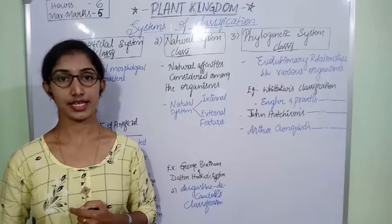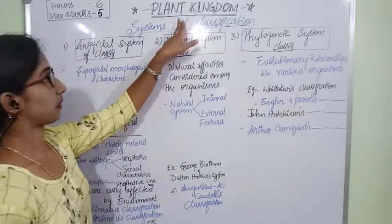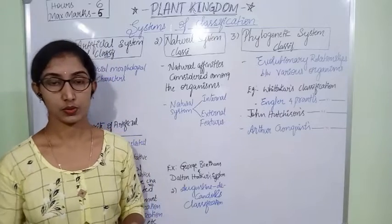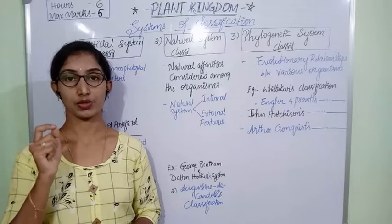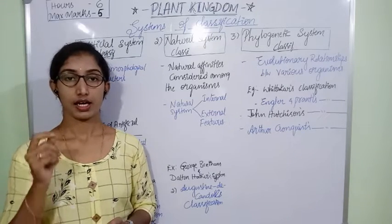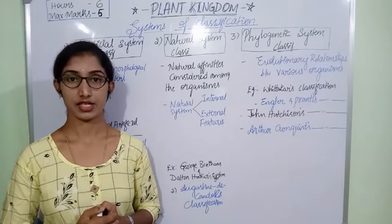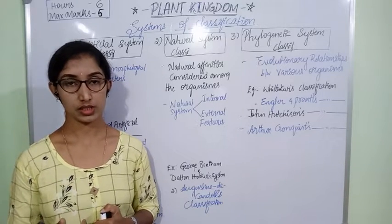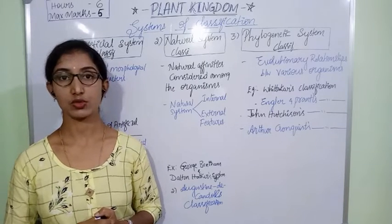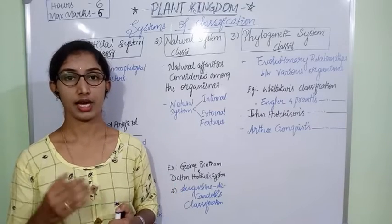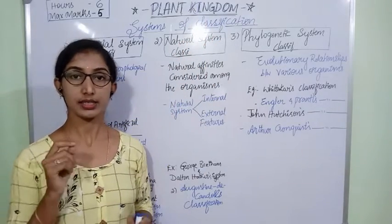In this part we are going to start with the new chapter, that is the third chapter of the first unit — Plant Kingdom. In the previous classes we discussed about biological classification, where organisms were classified into five different kingdoms: Kingdom Monera, Protista, Mycota, Kingdom Plantae, and Kingdom Animalia. We studied about the first three kingdoms, and now we are taking up the fourth kingdom, Kingdom Plantae, as a separate chapter.